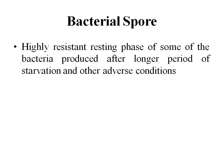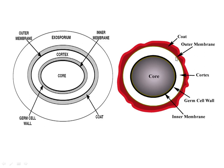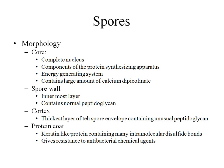Now we'll take up one of the important topics in morphology of bacteria — the bacterial spore. In future I will upload videos on flagella, pili, and bacterial spores separately with more detail. Bacterial spores are the highly resistant resting phase of some bacteria, produced after a long period of starvation or other adverse conditions. The spore has four important parts: the core, the cortex, the outer membrane, and the spore coat — a proteinaceous coat on the outside.